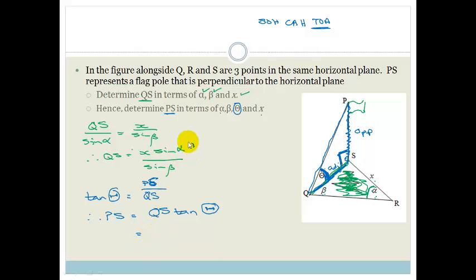So therefore, we can substitute this and we can say x sin alpha tan capital theta all over sin beta. And ta-da, we have finished. Let's check. Do we have alpha? Yes. Do we have beta? Yes. Do we have the capital Greek letter? Yes. Do we have x? Yes. Done.